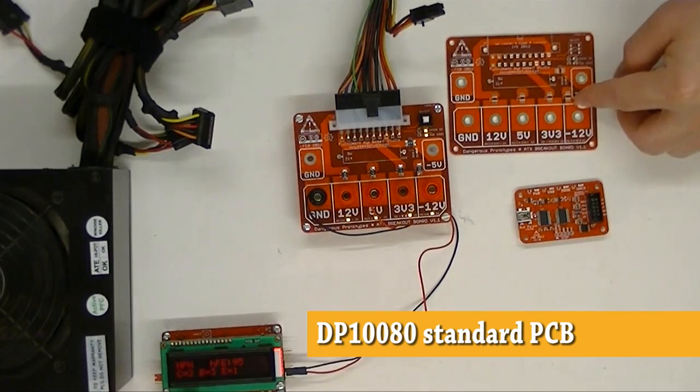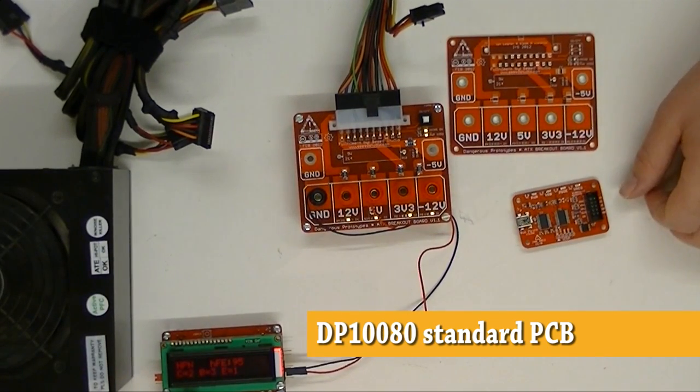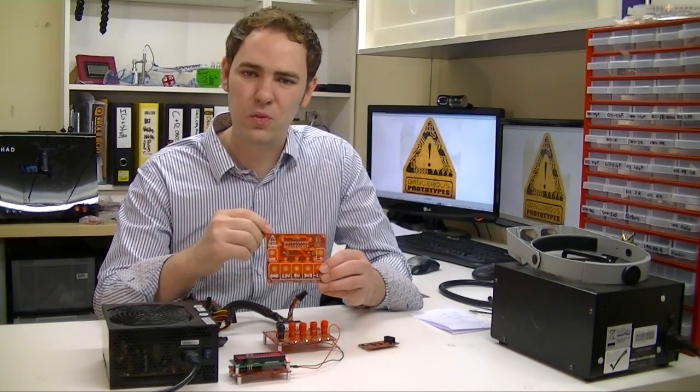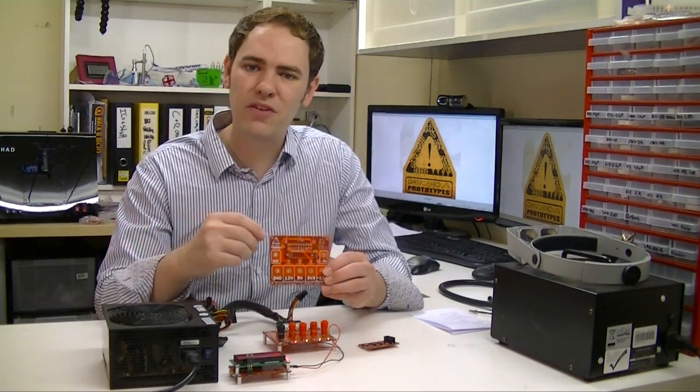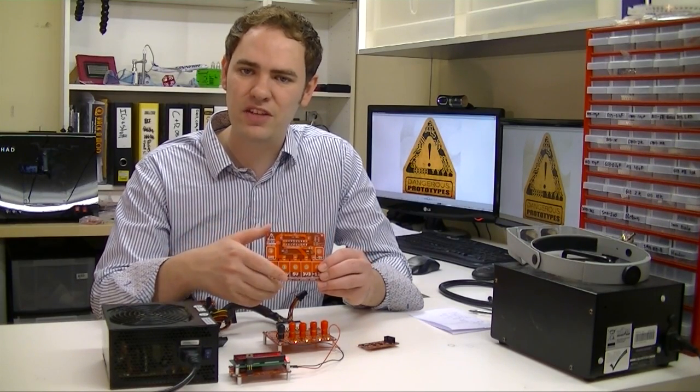This is the second board besides the bus pirate version 3.6 that uses our new standard dangerous prototypes PCB footprints. In the past we've been a little bit laissez-faire about the placement of our holes or whether we even include them on the board.